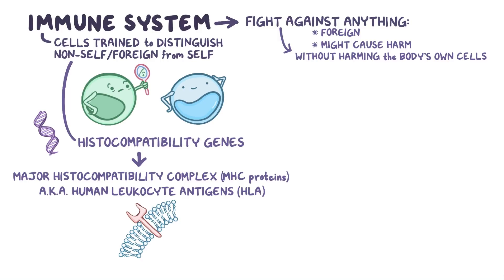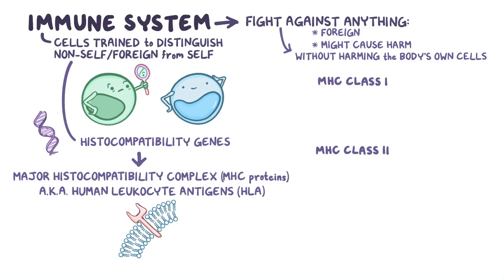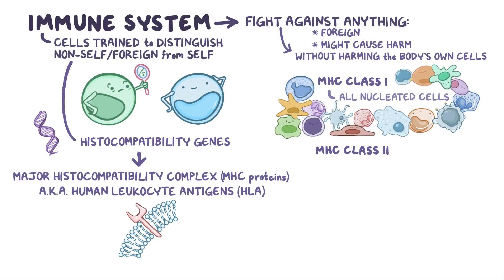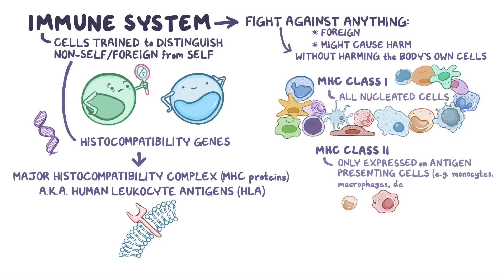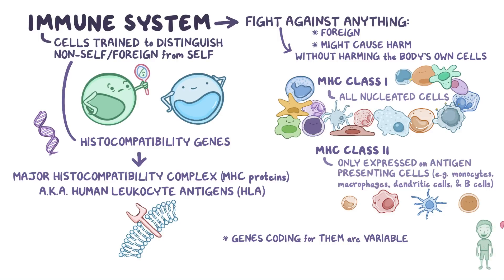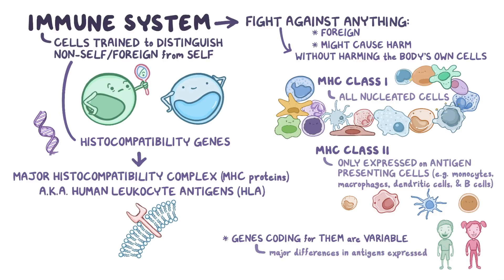The histocompatibility genes actually code for two classes of proteins: MHC class 1 and MHC class 2. MHC class 1 molecules are found on all nucleated cells throughout the body, while MHC class 2 molecules are only expressed on antigen-presenting cells like monocytes, macrophages, dendritic cells, and B cells. Because the genes coding for them are so variable in the population, two different individuals will have major differences in the antigens expressed on their cells, even siblings, unless of course they're identical twins.